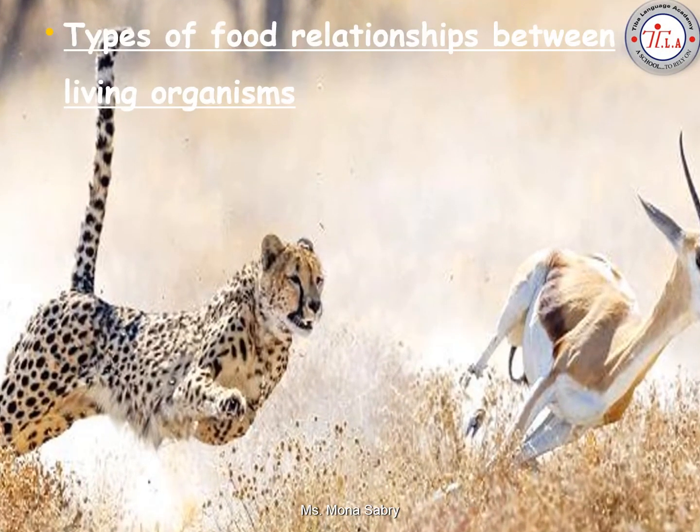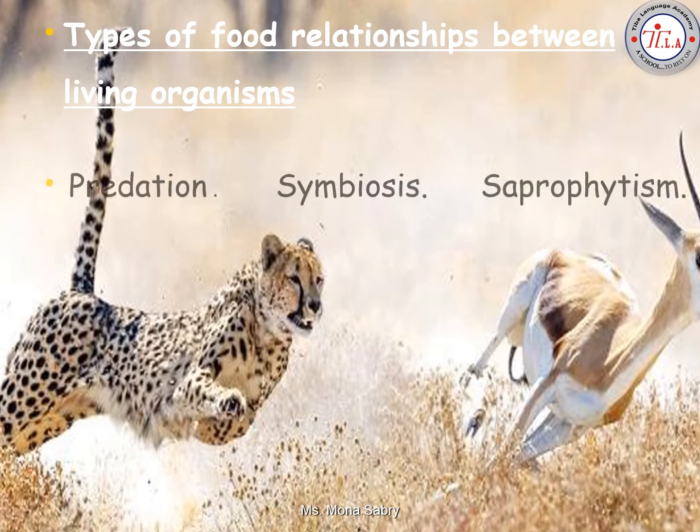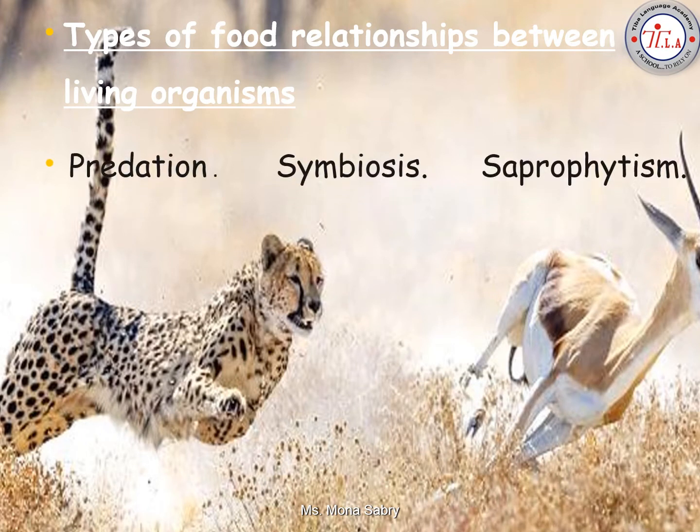There are three types of food relationships between living organisms: predation, symbiosis, and saprophytism.